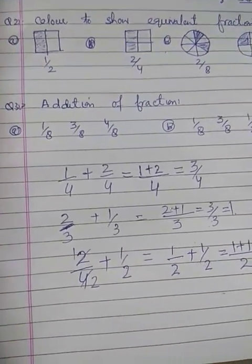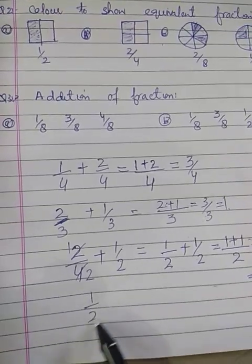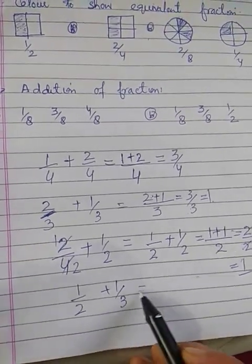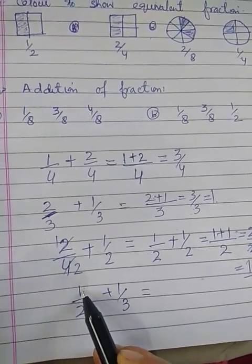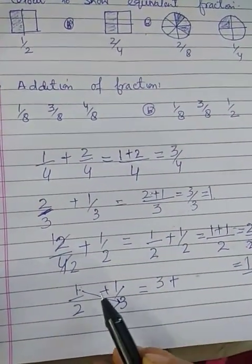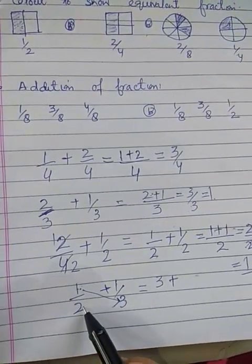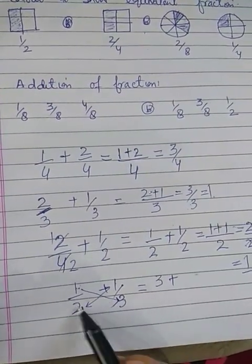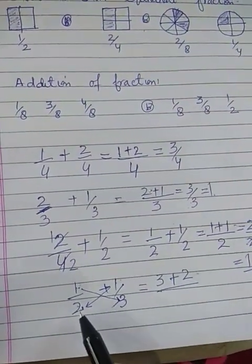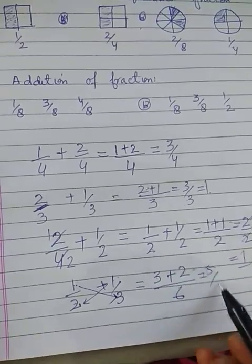But suppose the denominators are different, like 1 by 2 plus 1 by 3. The denominators are 2 and 3 - they are different. To add these fractions, we need to find a common denominator. We multiply 2 times 3 to get 6, so the common denominator is 6. Then 3 plus 2 equals 5 by 6.